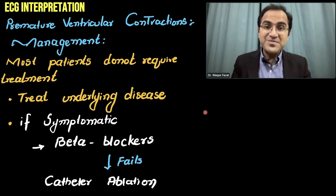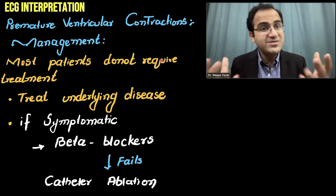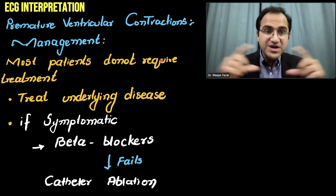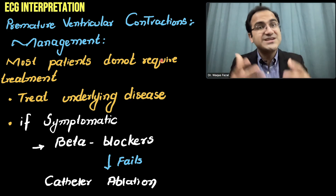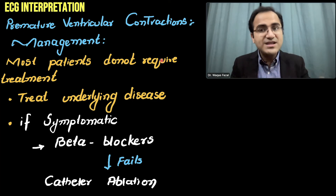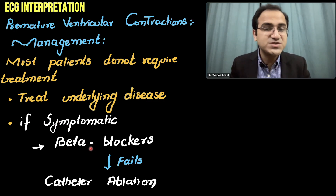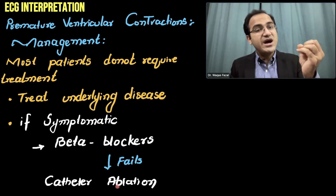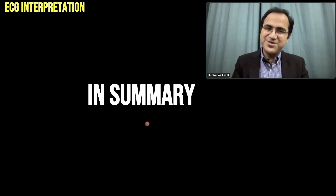Regarding management of PVCs: the patient might be asymptomatic and most patients do not require treatment. However, if PVCs appear on ECG, the patient must receive an echocardiography to look for cardiac defects causing the PVCs — identify the pathology and treat the underlying disease. If the patient is symptomatic with rapid heart rate, beta blockers can be used, but not in asthmatic patients. If beta blockers fail, catheter ablation of the ectopic focus can be performed.